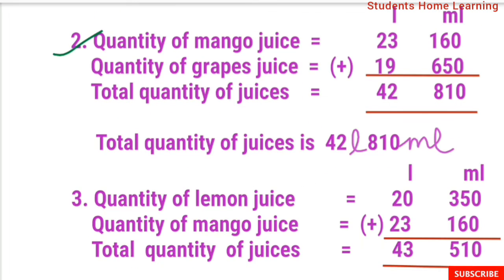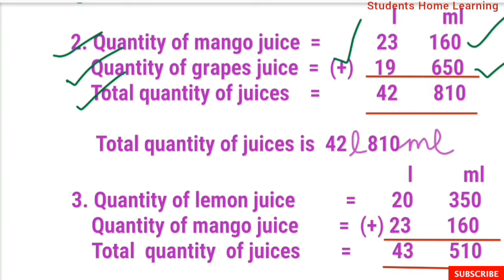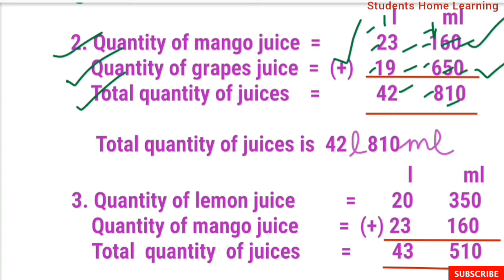Second: mango juice 23L 160ml plus grape juice 19L 650ml. Adding: 0 plus 0 is 0, 6 plus 5 is 11, carry 1, giving 2; carry 1, 1 plus 1 is 2; liter: 3 plus 9 is 12, carry 1, 2 plus 1 is 3, total 42. Total quantity of mango and grape juice is 42L 810ml.